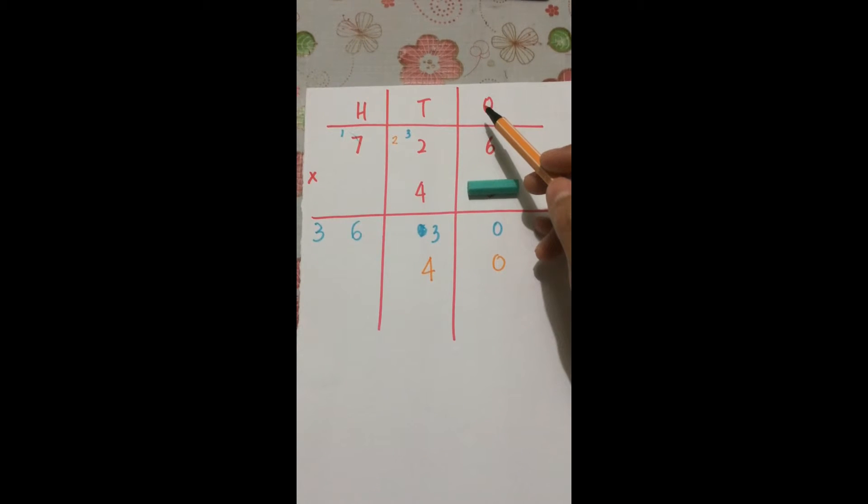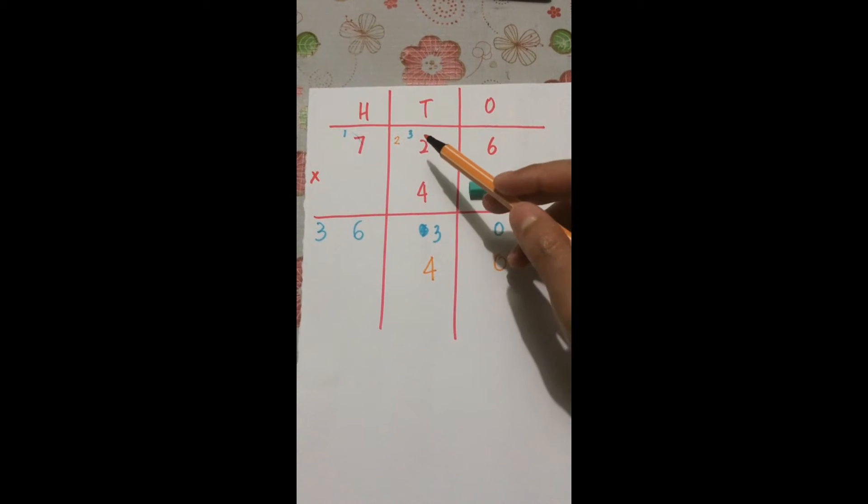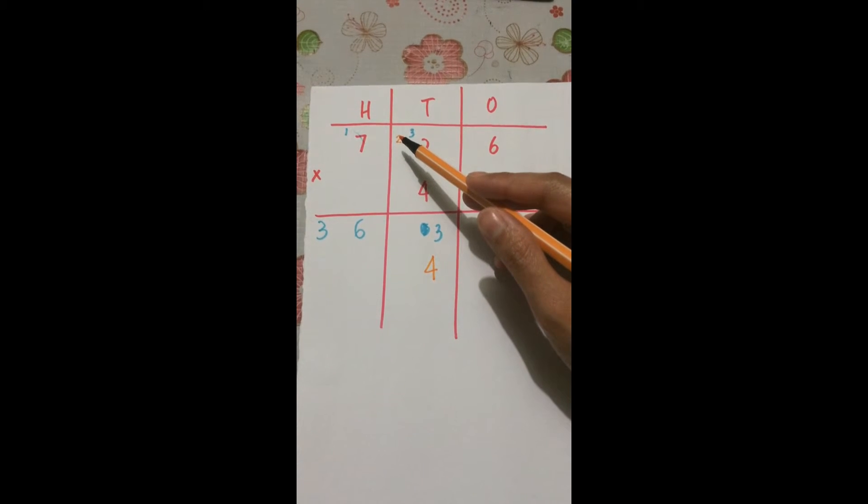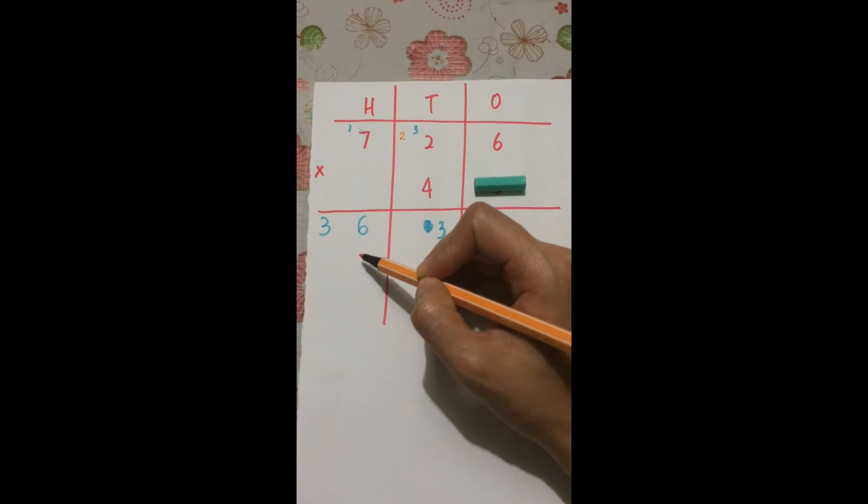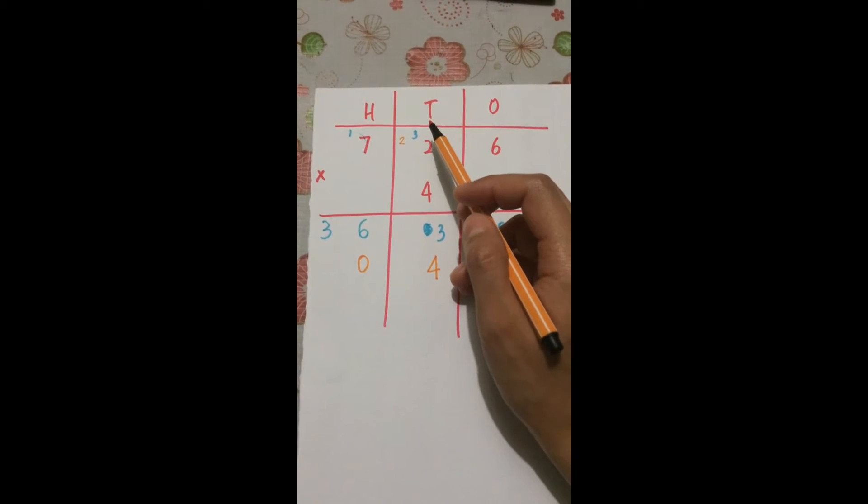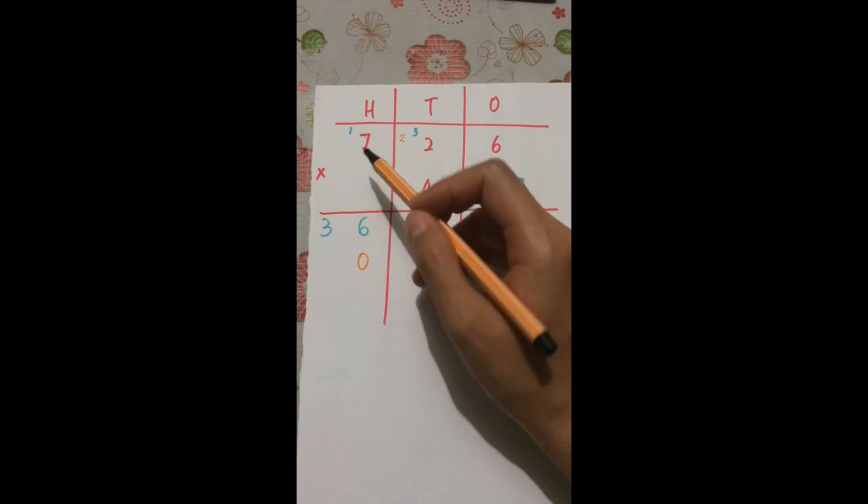So after 1s, you go on to 10s. 2 times 4 is 8. 8 plus 2 is 10. So where do you carry the 1 to? Just now you multiply by the 10s, so you carry it to the 100s.